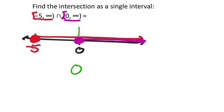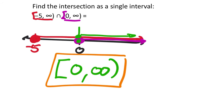And it's not only part of the red, but it's also part of the purple. So it's included in both. So it's also included in the intersection. From there, everything goes to the right all the way to infinity, which is never included. So this interval is the intersection of these two intervals.